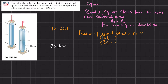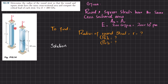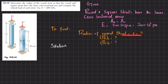Welcome back. Problem 10.14 — determine the radius of a round strut so that the round and square strut have the same cross-sectional area, and compute the critical load of each strut. Use E = 200 GPa. There are two columns: strut AB is round while CD is square in cross-section, 25 by 25 millimeters. Both lengths are one meter.